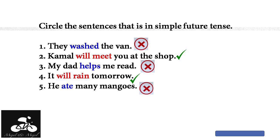'Kamal will meet you at the shop' — that is simple future tense. Very good. 'My dad helps me read' — that is simple present tense. 'It will rain tomorrow' — that is simple future tense. 'He ate many mangoes' — that is simple past tense.